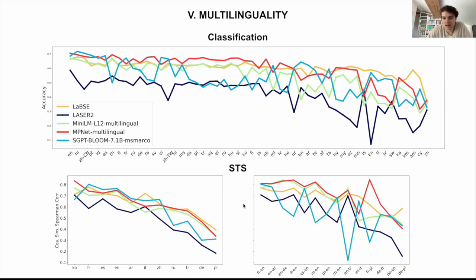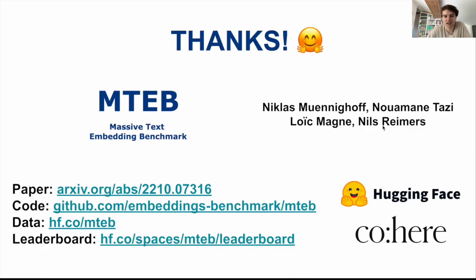For STS it's pretty similar — MPNet is very strong, and again the SGPT model is very spiky. LASER is generally pretty poor and doesn't perform that strongly, even though it has been trained on lots of languages, which might be due to its different architecture and training procedures. LASER is the only non-transformer model listed here. There are more results in the paper and also more models benchmarked on more languages. I invite you to take a look at the paper if you're interested, or the code on GitHub, the datasets, or the leaderboard on Hugging Face.